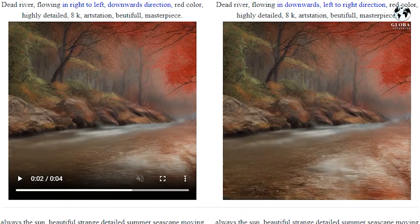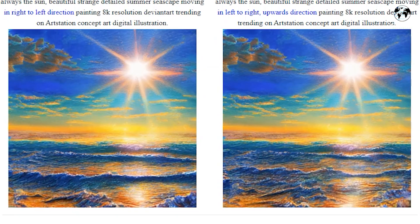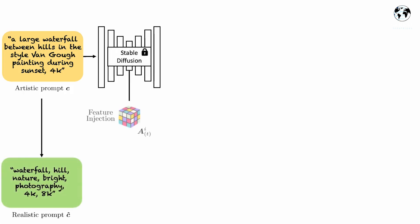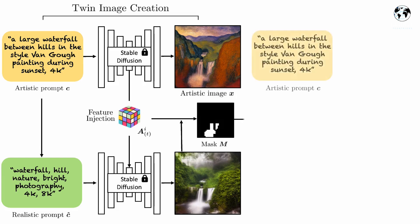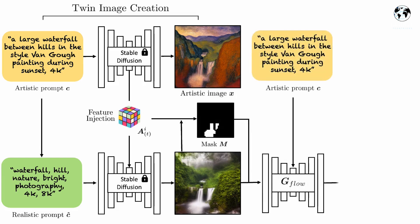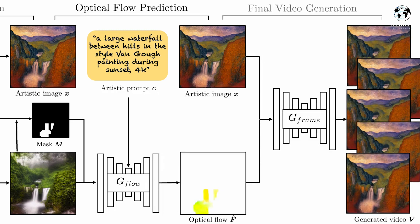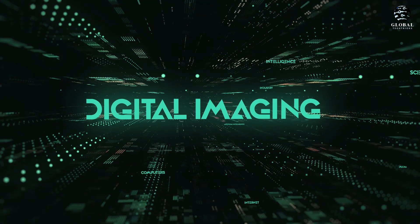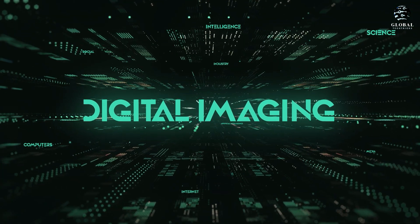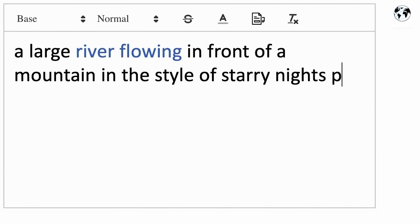To overcome these challenges, we propose a concept of synthesizing image pairs from a single text prompt: an artistic image that captures the style and appearance described in the text, and a pixel-aligned realistic twin that simplifies layout and motion analysis. By utilizing existing datasets of natural images and videos, we can accurately segment the realistic image and predict plausible motion based on semantic information. This predicted motion can then be transferred to the artistic image, resulting in the final cinemagraph.